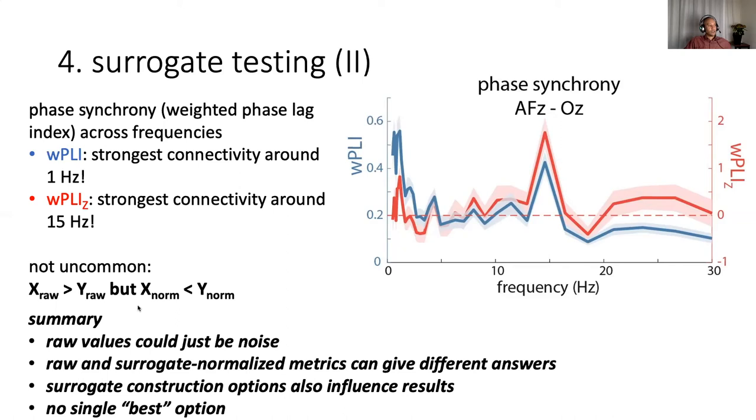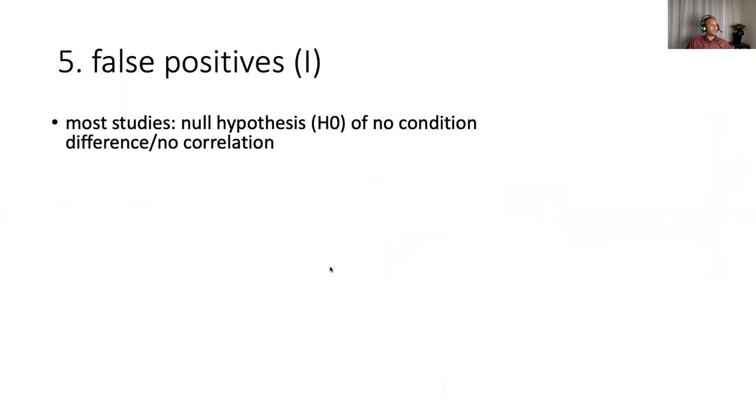So this is unfortunately not uncommon that the relations between different frequencies or different channels or different individuals in terms of raw values are different from the ones when you use normalized values. So to summarize this bit, raw values could just be noise, and it's generally a good idea to test this. Raw and surrogate normalized metrics can give you different answers. Surrogate construction options also influence your results. And finally, typically again, there's no single best option.